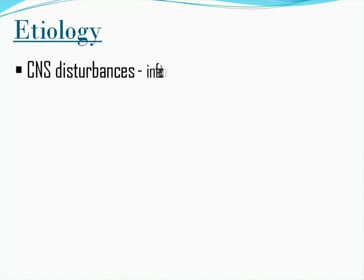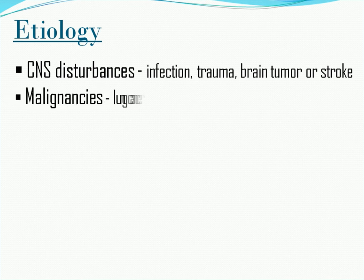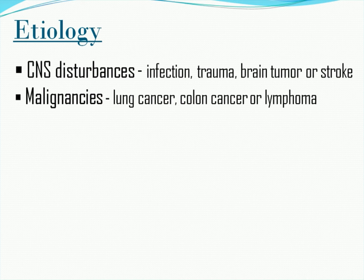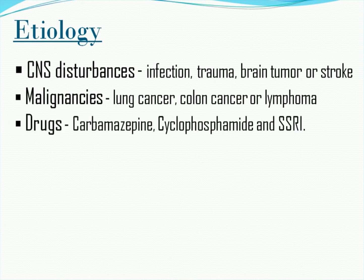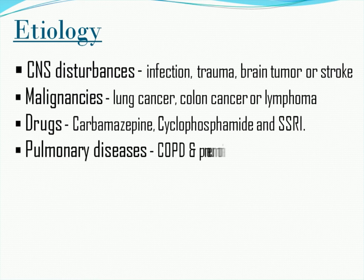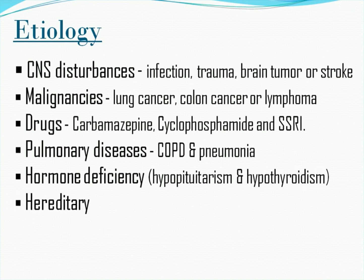Etiology. Usually, the Syndrome of Inappropriate Antidiuretic Hormone occurs as a secondary effect from another disease process such as CNS disturbances like infection, trauma, brain tumor, or stroke. Malignancies — lung cancer is the most common, followed by colon cancer and lymphoma. Drugs or medications like carbamazepine, cyclophosphamide, and selective serotonin reuptake inhibitors (SSRIs) — these drugs enhance the release or effect of antidiuretic hormone. Next is pulmonary diseases like COPD and pneumonia. Hormone deficiency, and it can also be hereditary.